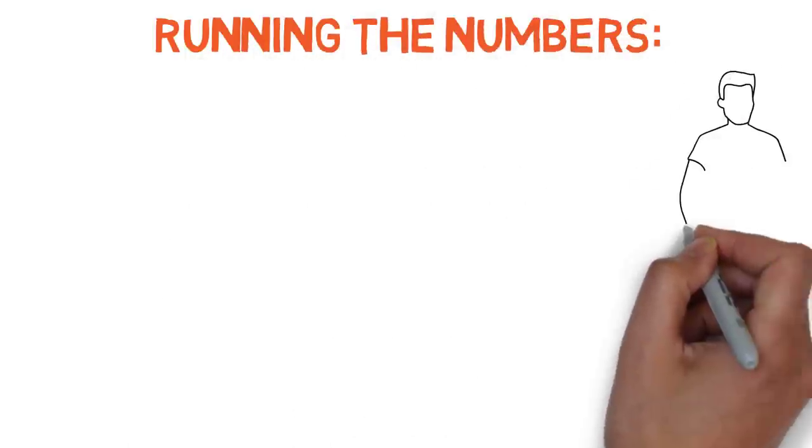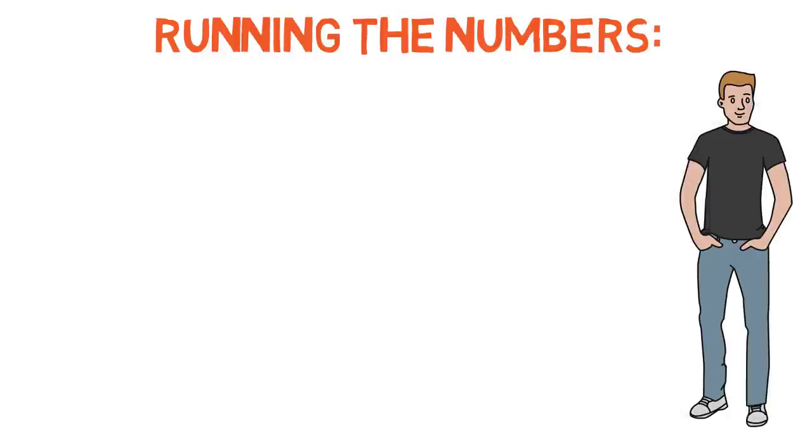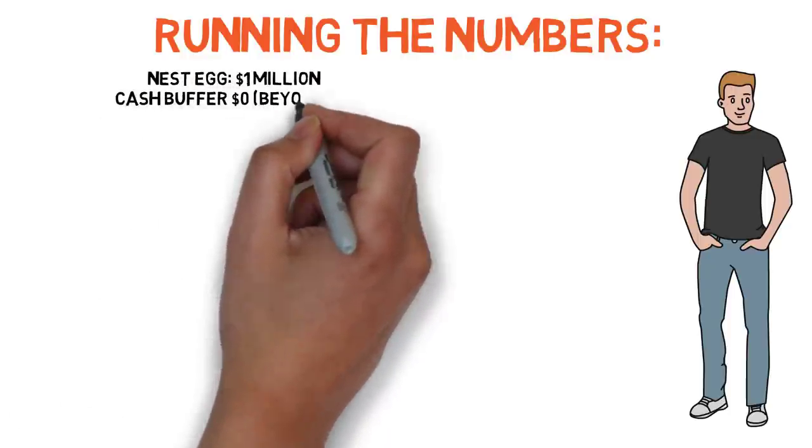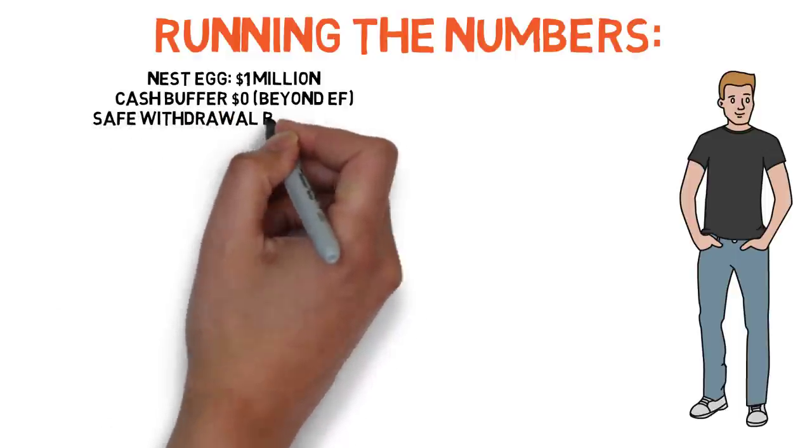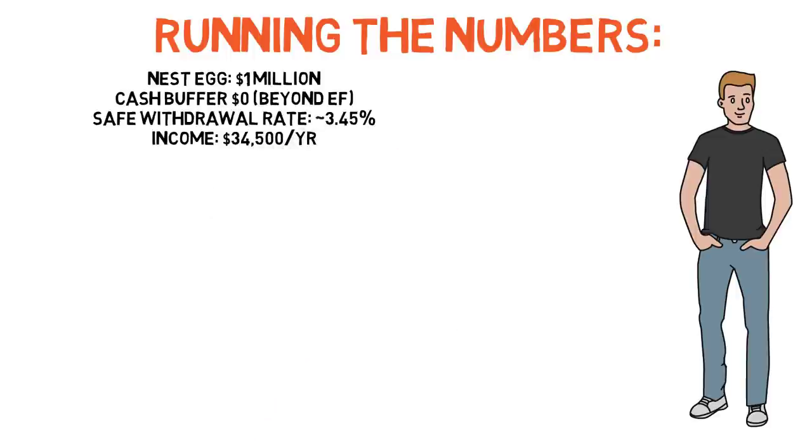Let's say that John was just about to pull the trigger for FIRE. He's got $1 million in an S&P 500 index fund and no cash buffer, beyond his emergency fund of course, because we should all still have that. What would his safe withdrawal rate be? Well, at least based off the data I have going back to 1927, it would be about 3.45% before taxes and expenses, though that figure is based on the yearly return data, so it may not capture all the granular outcomes. But for the purposes of illustrating the difference between having an additional cash buffer and not, an estimate like this will serve us just fine.